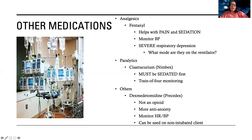There are also paralytics. The one we use most often is cisatracurium — I usually call it Nimbex. This is a medical paralytic; it paralyzes the muscles so they can relax. Think about patients with ARDS — acute respiratory distress syndrome — or patients that are just really non-compliant with the ventilator. Maybe their lungs are really stiff or they're really sick, and their lungs are just not complying and their breathing is off.